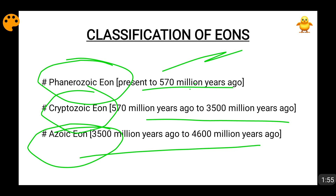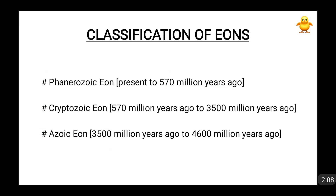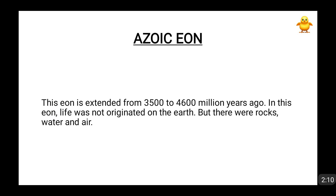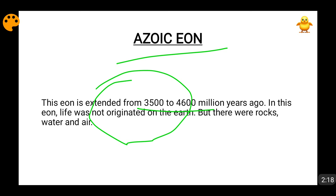In brief, I will tell you about Eozoic and Cryptozoic Eon. We will focus our efforts on the Phanerozoic Eon, which is the most important because most of the development of life forms have taken place in it. The Eozoic Eon extended from 3,500 to 4,600 million years ago.